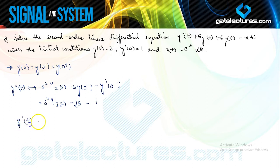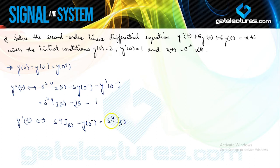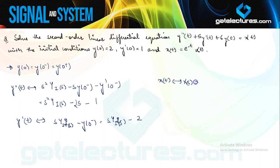The Laplace transform for y dash of t is going to be s·Y(s) minus y(0−), which equals s·Y(s) minus 1 — this is the unilateral result. And the Laplace transform for x(t), X(s), is going to be equal to 1/(s+1).